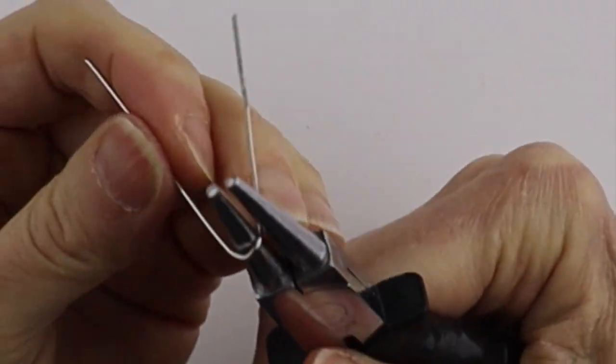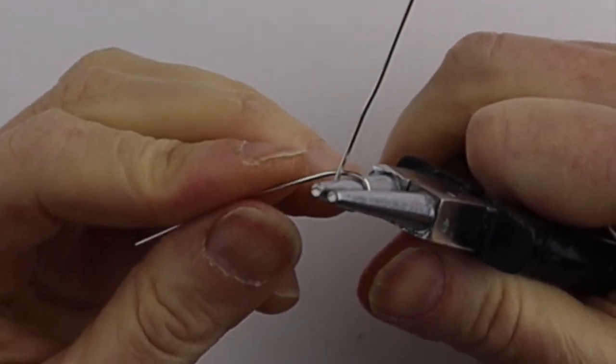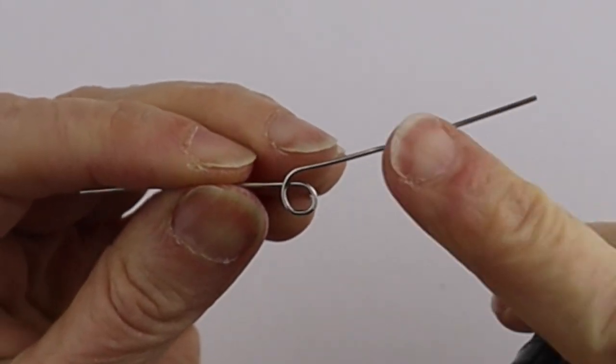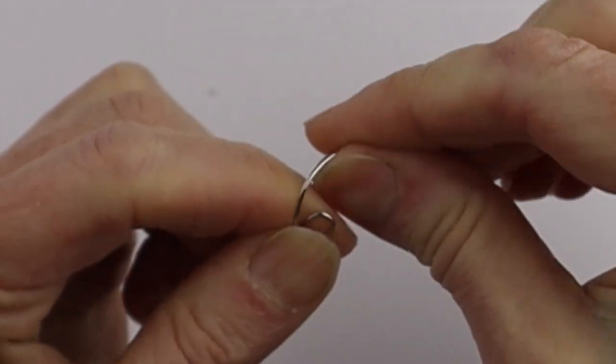Once we have it flattened, we're just going to take this around and we want to form our knot. Make sure this end is a little longer than that end and then we want to bring it through the loop.